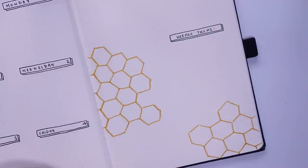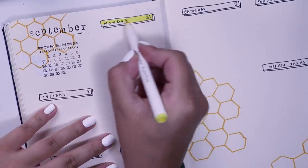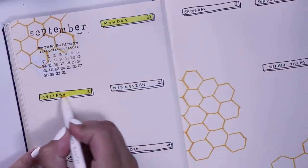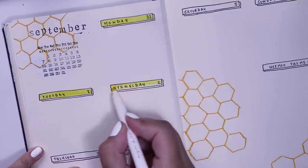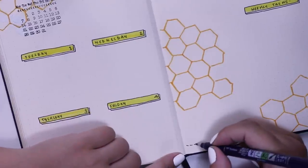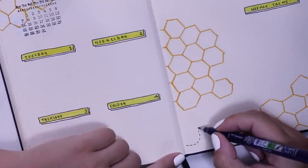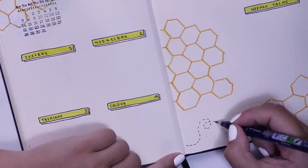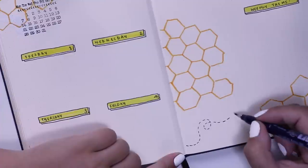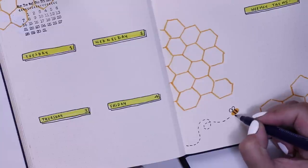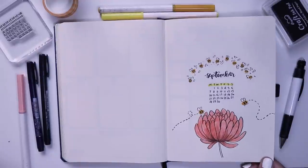After adding some more hexagons and honeycombs - is it honeycombs that I'm thinking of? I think it might be honeycombs. After adding some more honeycombs, I went in and highlighted all of the little rectangles I did for the days of the week with my lighter yellow color. Then I just added a little bee coming into the page in that empty space over there.